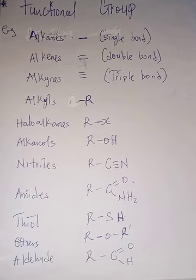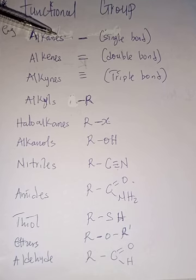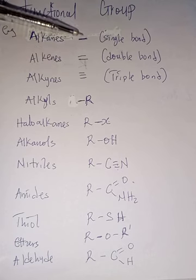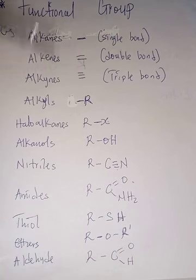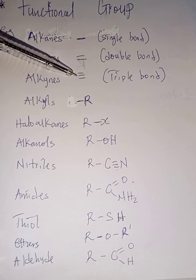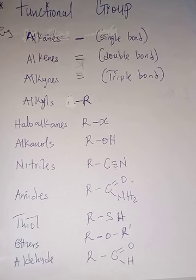Let's look at some examples. We have alkanes, alkenes, and alkynes. The difference between alkanes, alkenes, and alkynes is just the bond — alkanes have a single bond, alkenes have a double bond, and alkynes have a triple bond. This is why we call alkanes saturated and alkenes and alkynes unsaturated — because of the single, double, or triple bond between their carbon atoms.